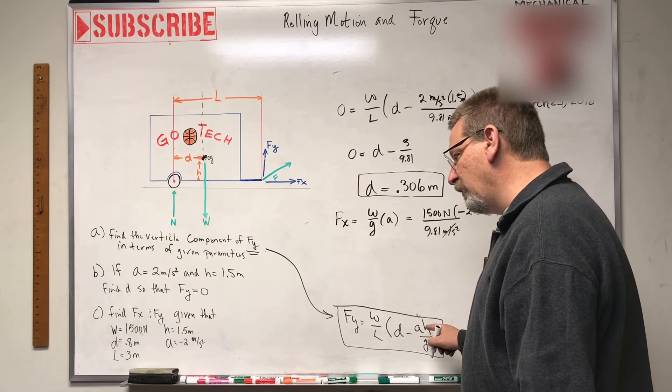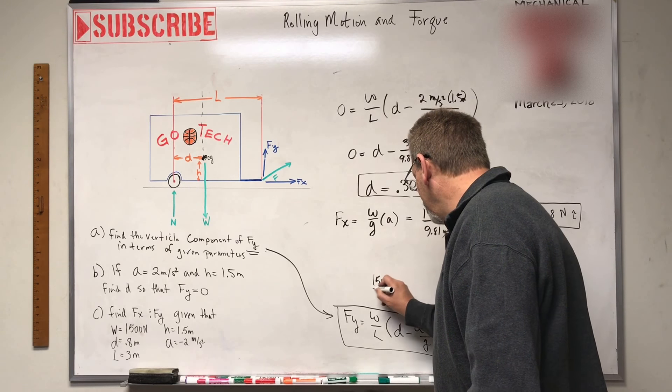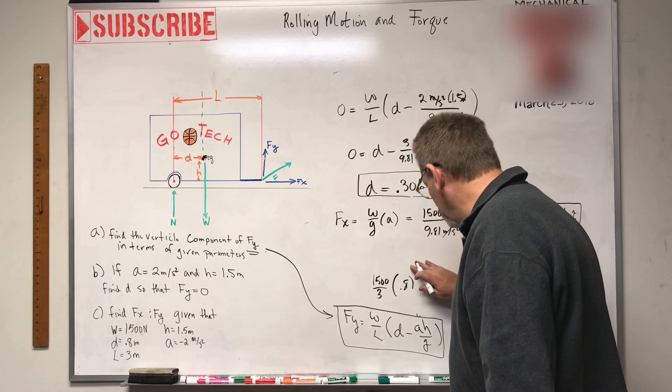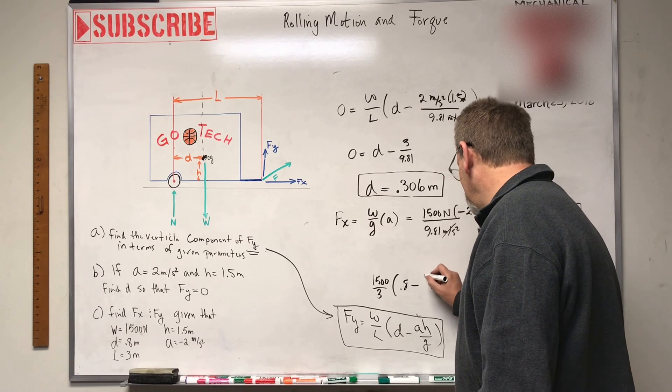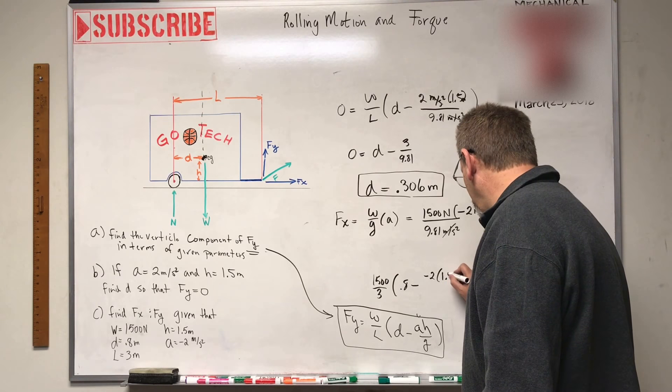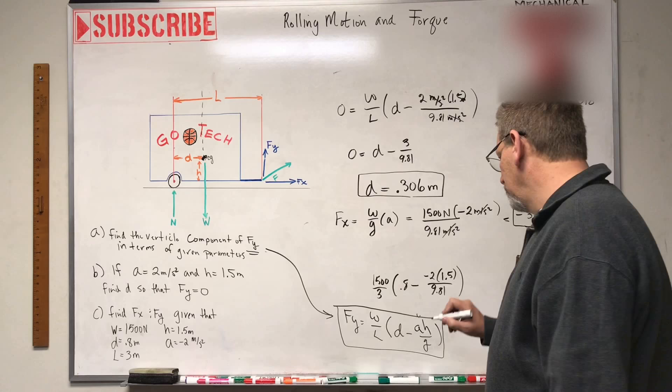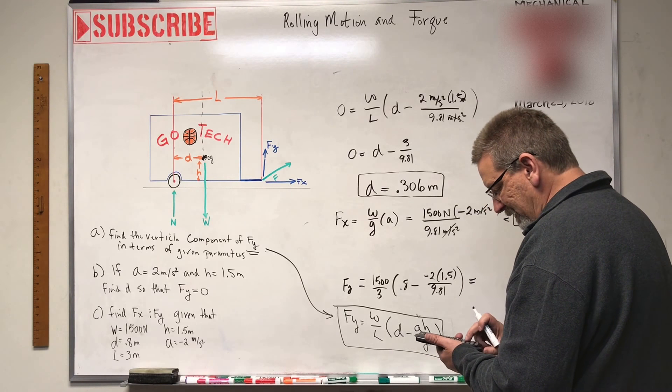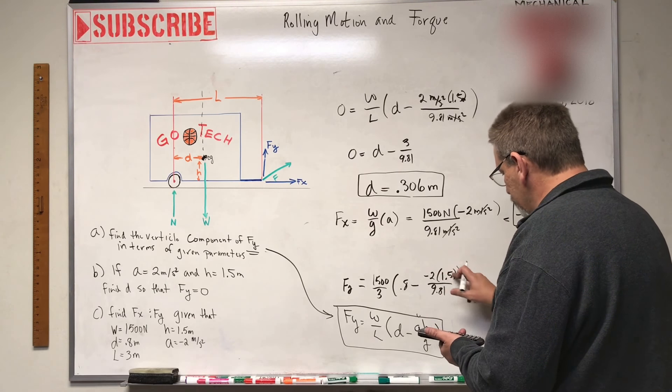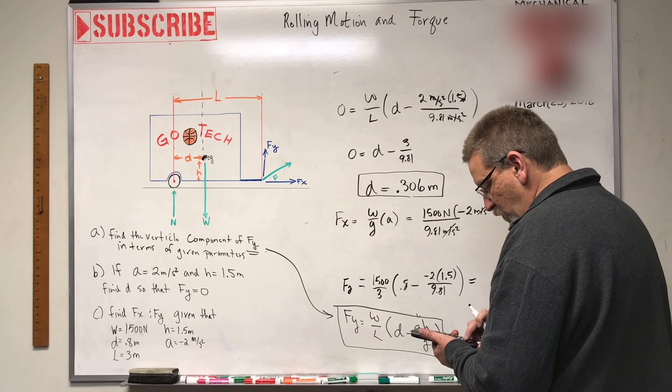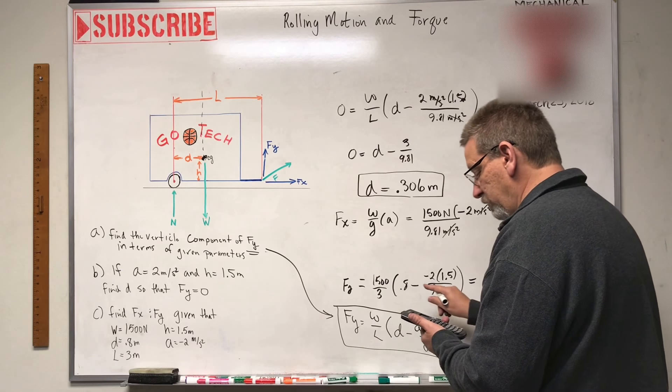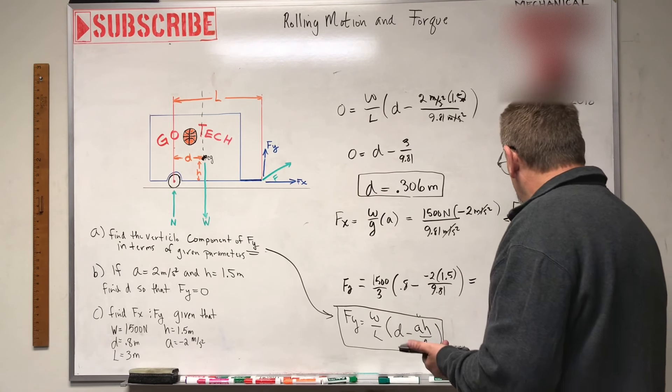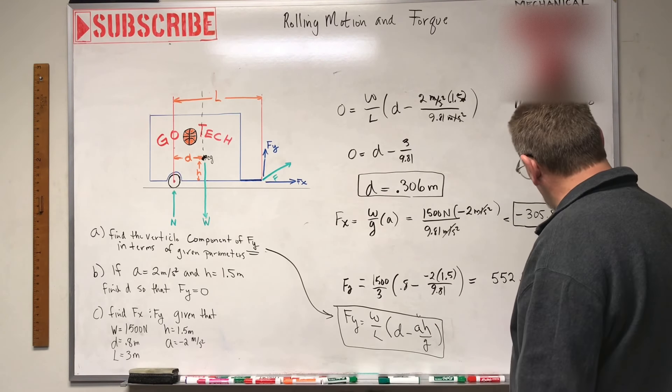And then I've got y down here. Let's see. Let's just plug in what we know down here. What do we got? We got 1,500 divided by W over L is 3 times D, which is 0.8. Whoa. What are you doing there, Princey? Minus A, that's a minus 2 times H is 1.5 divided by G, 9.81. All that equals Fy, which equals, okay, here we go. Now minus of minus is going to make a positive, right? So 0.8 plus, that's 3 divided by 9.81, isn't it? 3 divided by 9.81, close parentheses, equals, that's 1.1, and I'm going to multiply that by, how about 500? So times 500 equals 552.9, or 553 newtons.